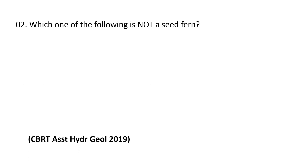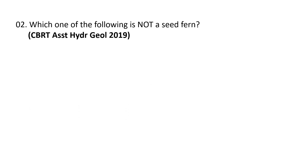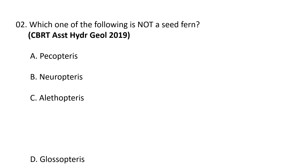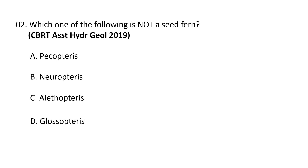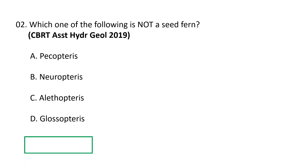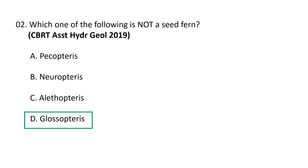Next question: which of the following is not a seed fern? A) Pecopteris, B) Neuropteris, C) Alethopteris, D) Glossopteris. Glossopteris is not a seed fern, so D is the correct option.